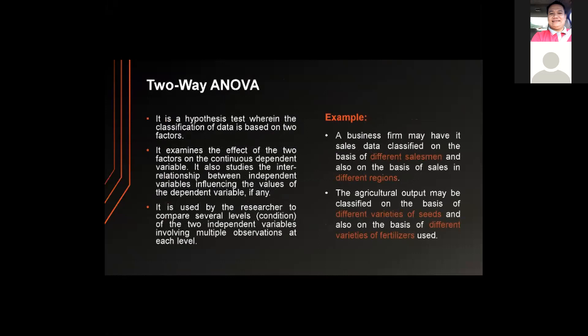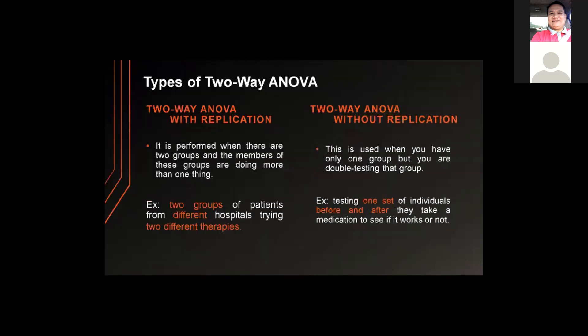The two-way ANOVA is a hypothesis test wherein the classification of data is based on two factors. It examines the effect of two factors on the continuous dependent variable and studies the interrelationship between independent variables influencing the dependent variable. For example, a business firm may classify sales data based on different salesmen and on sales in different regions. Agricultural output may be classified on the basis of different varieties of seeds and different varieties of fertilizers used.